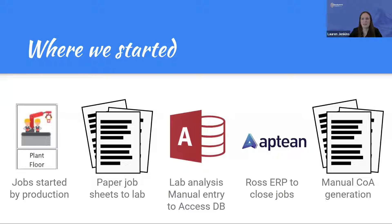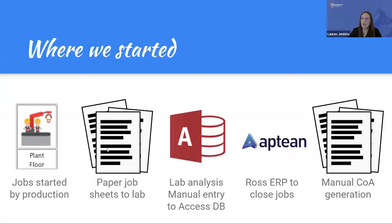Prior to LIMS and SAP, we had very manual processes. We had a module called Plant Floor where jobs were started by production. We used paper job sheets, and lab results were written on those sheets and also manually recorded in an Access database. These results were then transmitted to ROSS ERP, and there was a manual generation process for the certificate of analysis.